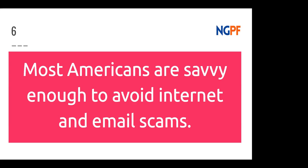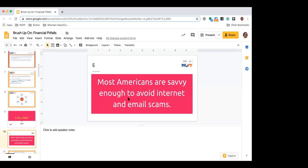14 of you disagreed that most people are savvy enough to avoid scams, and five of you agreed. If you haven't seen it at a FinCamp, it's a fun activity that gets students up out of their seats. You'd have your students discuss with one another — find somebody who thinks similarly, somebody who thinks differently — pair share, whatever you want. It's a good way to take topics from the financial pitfalls unit and get students thinking critically and discussing.